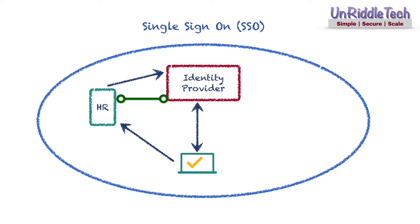The application verifies the token and provides appropriate access to the user. The user may then log into other applications like payroll without typing username and password again, if those applications are configured to trust the same identity provider. Access is provided as long as the user has a valid token or claim. It is important to secure the token by configuring an expiration time and by implementing hashing and digital signatures appropriately. These security controls reduce the risk of bad actors gaining access even if they obtain the token.